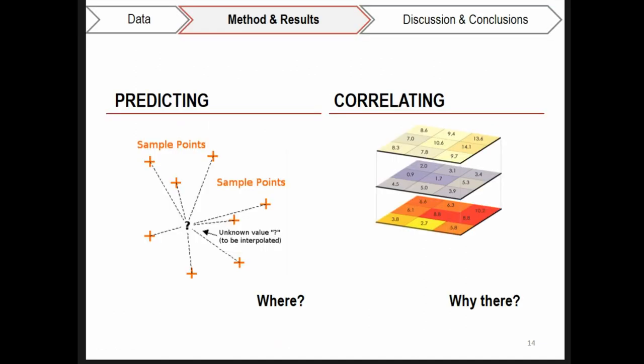Several geostatistical tests were performed, though it was by means of predicting and correlating that we achieved the most meaningful results in terms of knowledge reach. Through them, we were able to answer the questions where and why there. Both procedures will be briefly explained and exemplified in the following slides.